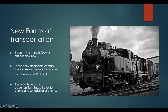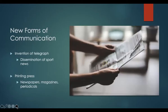New forms of transportation in the early 1800s — travel was difficult and slow, everything happened by horse, and it took days and days. In the early 19th century, the steamboat engine was developed and the railroad was being laid, allowing more easy access to sports, easing travel to events and scheduling. New forms of communication — the invention of the telegraph allowed dissemination of sport news. The printing press was also created, so newspapers, magazines, and periodicals began spreading sports coverage widely.